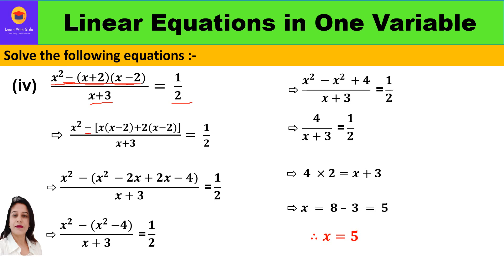Whenever we simplify binomial times binomial and find its product, always remember to keep the minus sign outside the bracket. We start by solving (x plus 2)(x minus 2): that is x times (x minus 2) and 2 times (x minus 2). So we write x² minus, in bracket, x(x minus 2) plus 2(x minus 2), upon (x plus 3) equal to 1/2.